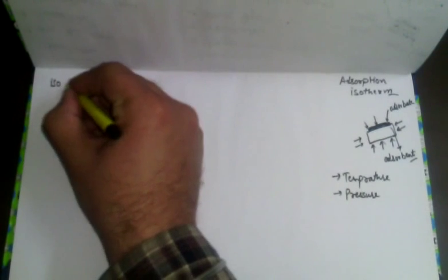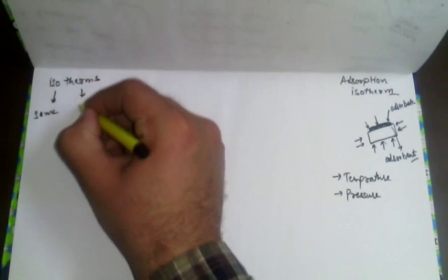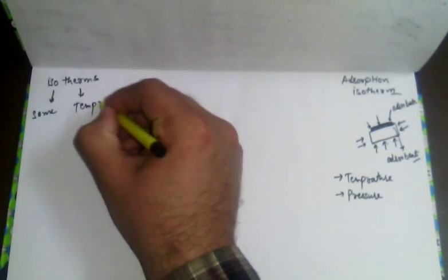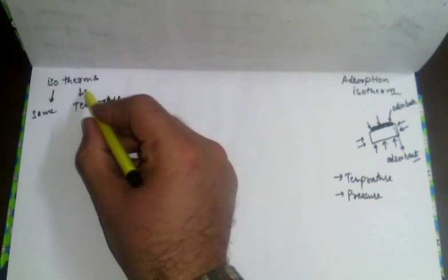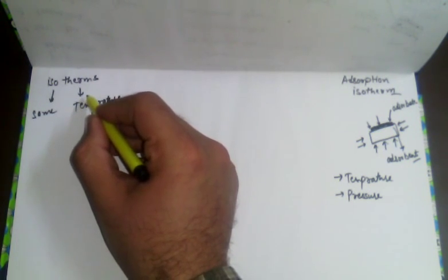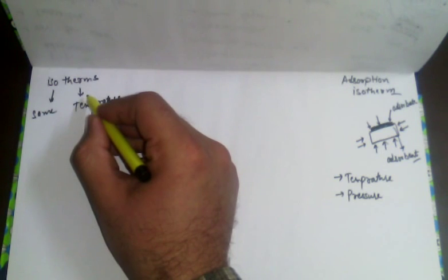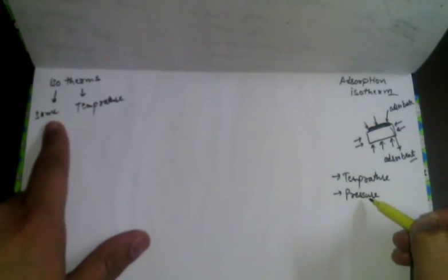We are talking about isotherms. The word 'iso' means same and 'therm' means temperature. So an adsorption isotherm is a graph plotted between the quantity of substance sticking to the surface and the pressure, keeping the temperature the same.